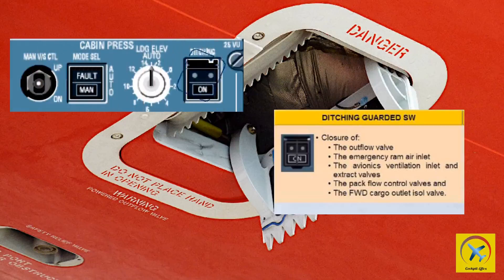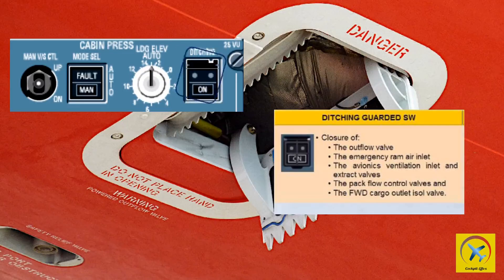Caution: if the ditching push button is set to ON while on the ground, with a low-pressure ground cart connected and all doors closed, a differential pressure will build up.